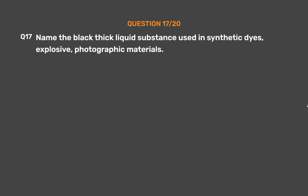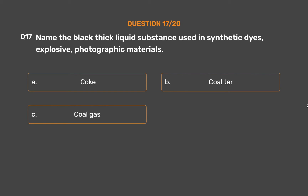Question number 17: Name the black thick liquid substance used in synthetic dyes, explosives, and photographic materials. Option A: Coke. Option B: Coal tar. Option C: Coal gas. Option D: None of these.